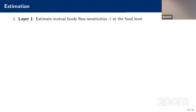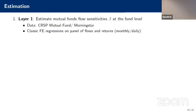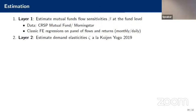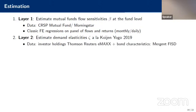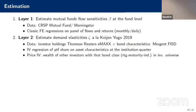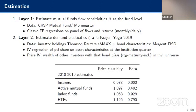For estimation, we proceed in two layers. The first layer estimates mutual fund flow sensitivities using CRSP and Morningstar data — looking at a panel of flows and returns to see how flows in one period change relative to returns from the previous period. The second layer estimates demand elasticities using a method similar to Ralph and Moto's, and also Lucas and co-authors', using holdings data and instrumenting for price using the wealth of investors that have that bond class in their investment universe in that period. Price elasticities are on the order of 1; insurers have lower elasticities than mutual funds. We set insurer beta to zero, and betas for mutual funds are in the 0.5 to 0.9 range.